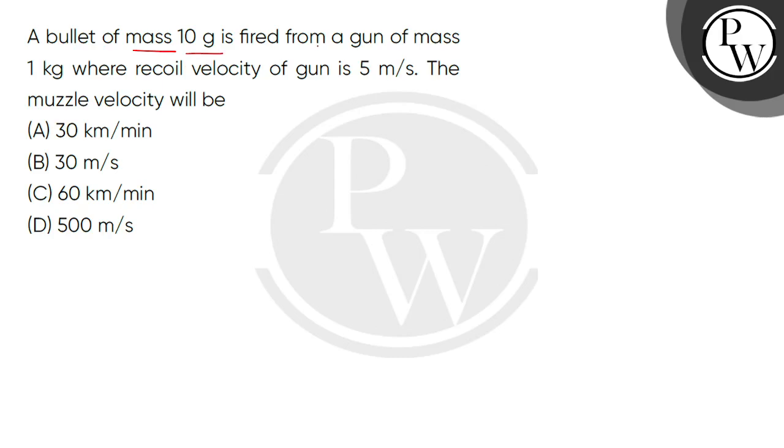A bullet of mass 10 gram is fired from a gun of mass 1 kg. The recoil velocity of gun is 5 meter per second. The muzzle velocity will be.